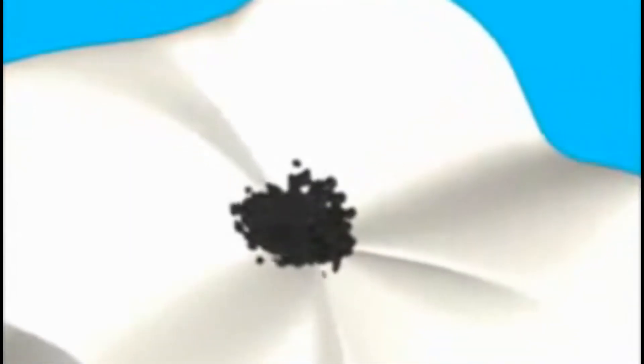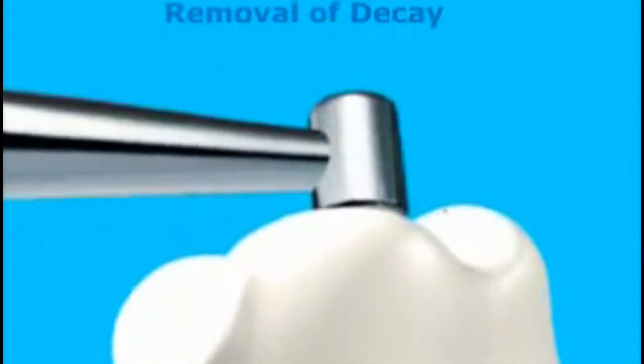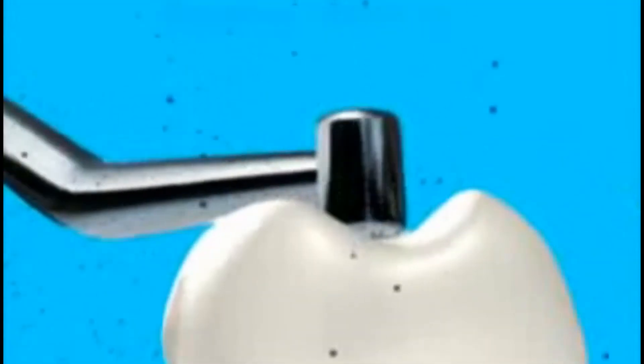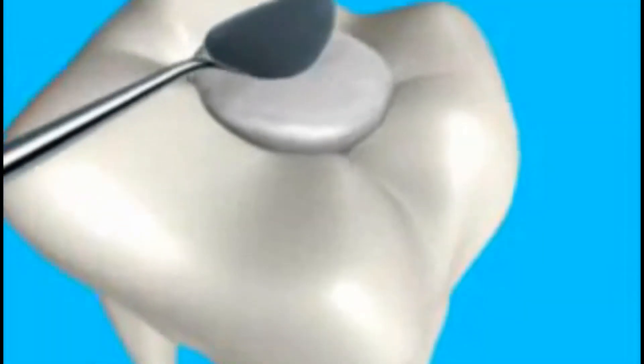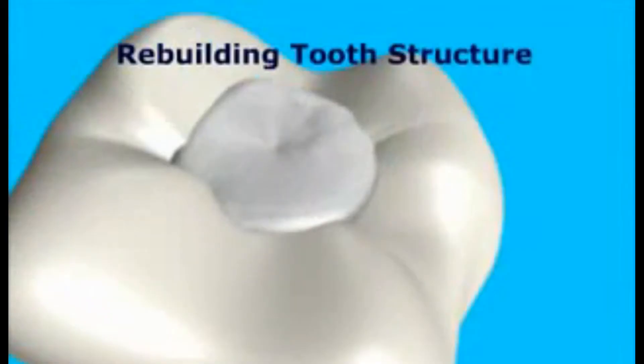If the plaque is not removed thoroughly and routinely, tooth decay will occur. Treatment of a cavity generally consists of two steps: first, removing the decayed portion of the tooth — under local anesthesia, a high-speed dental drill is used to remove the decay and prepare the tooth for the filling; and second, rebuilding the missing tooth structure with a suitable filling material.